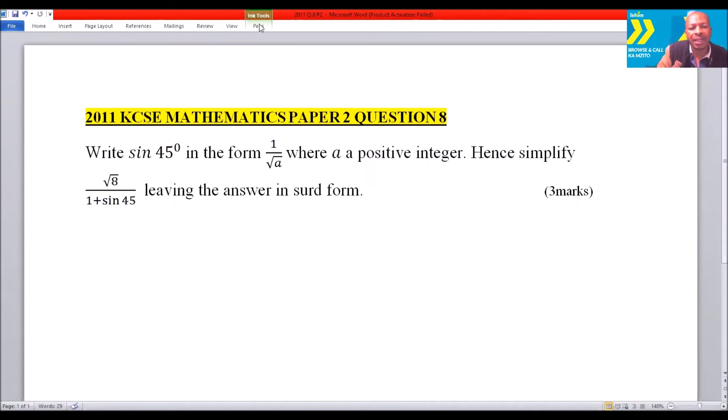So what we do here is, since we know 45° is a special angle, we draw a triangle. So we say this is 45°, this is 45°, and this is 90°.